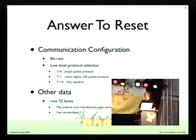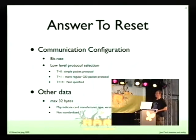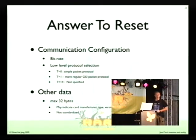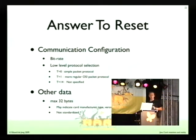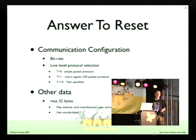T equals zero has been defined in the late 80s. It was a protocol that could be implemented on even smaller processors. T equals one was an attempt by the Germans to do a much more rigorous OSI-compliant version of the protocol. Most cards now support both protocols, but all cards always support T equals zero for the first few bytes they send out, and you can then negotiate with the protocol exchange protocol. T equals 14 is the protocol that you want to use if you are hacking the card, because you can define anything you want.